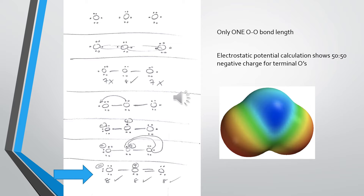Here's another experimental fact which is a problem for our theory. When you calculate and measure the electrostatic potential charge density on the three oxygens, you get an electrostatic potential map where the excess electron density on the terminal oxygens is identical. Yet when you look at the structure we worked out in the bottom panel, only one of the oxygens has a full negative charge and the other one is neutral.